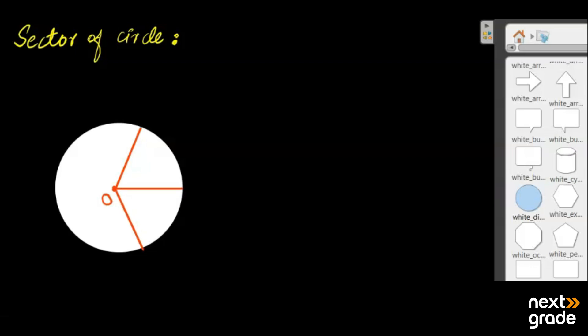We can consider the two radial segments and define the angle between them. This angle is theta — any angle. We also have an arc length, and this is the radius. You can see: this is one radius and this is the other radius.